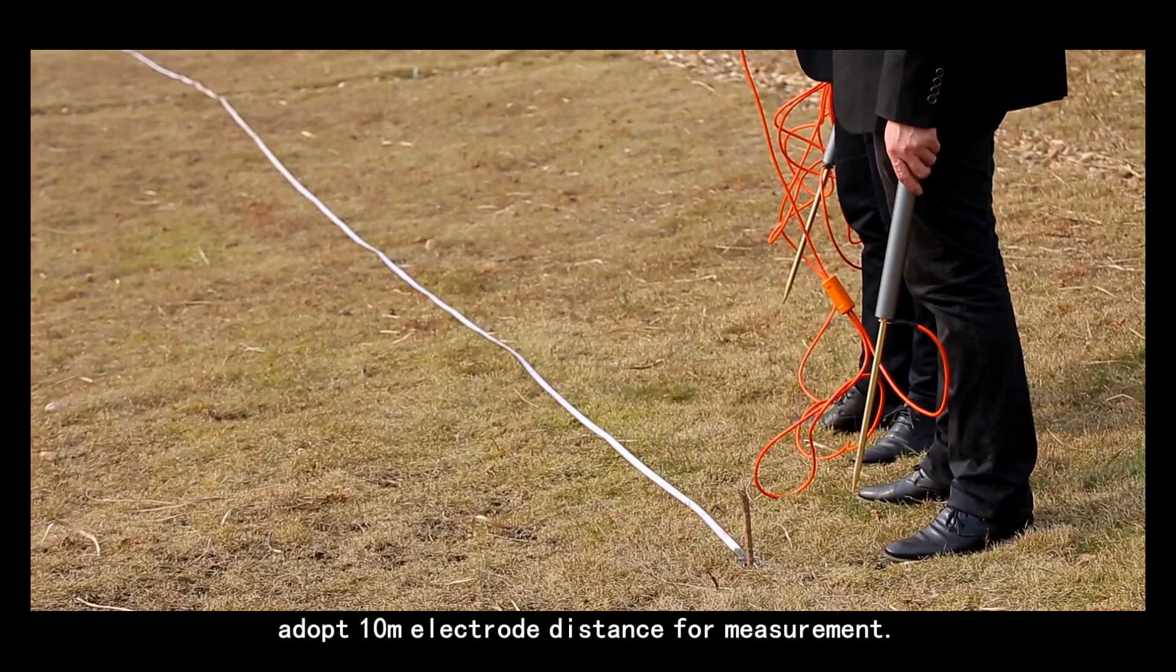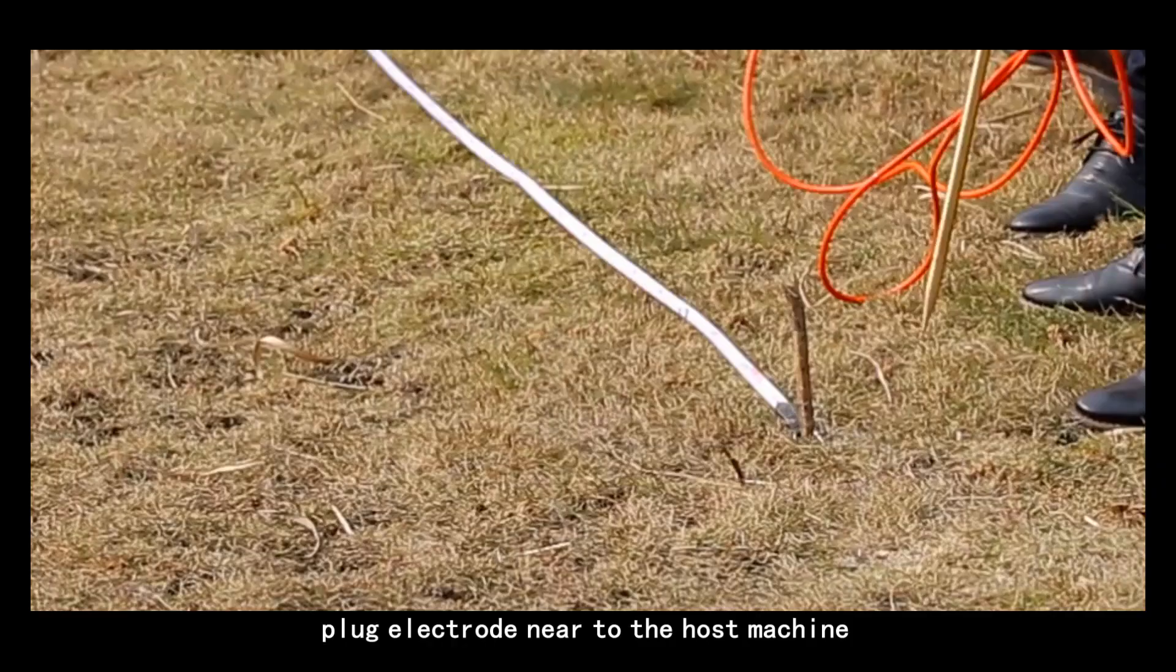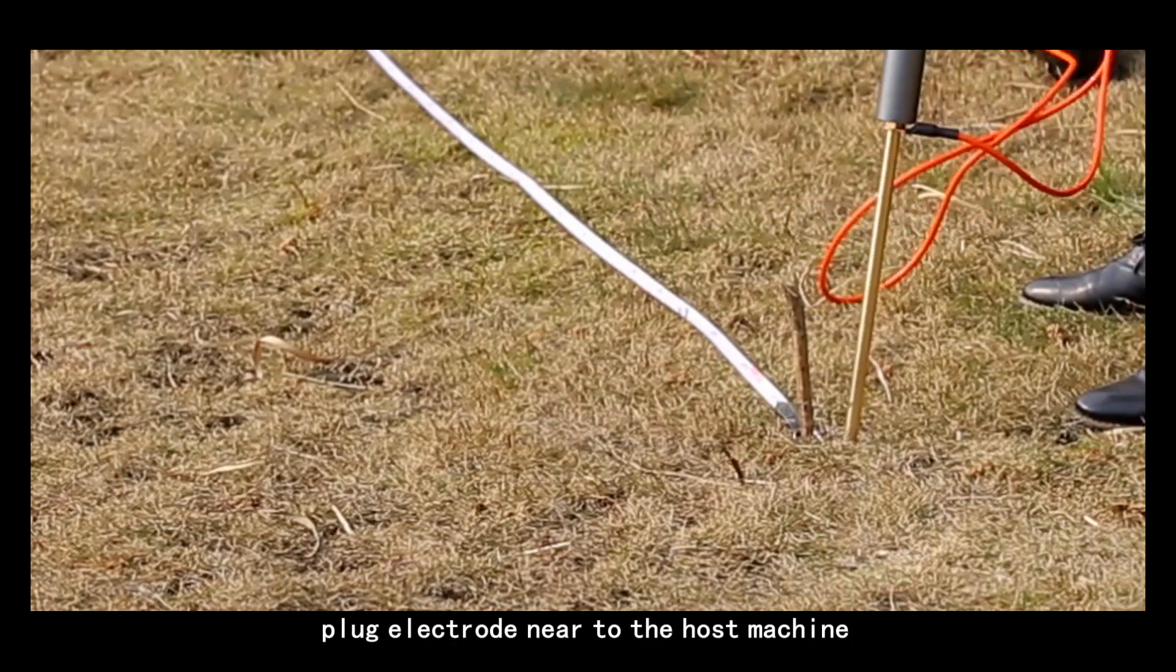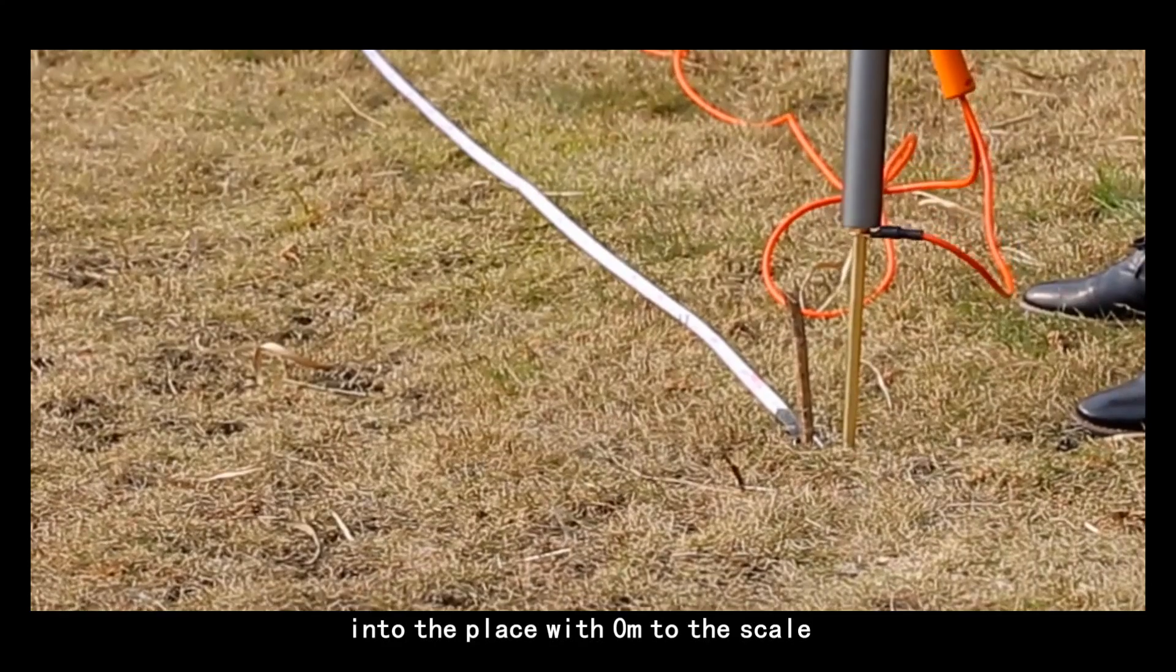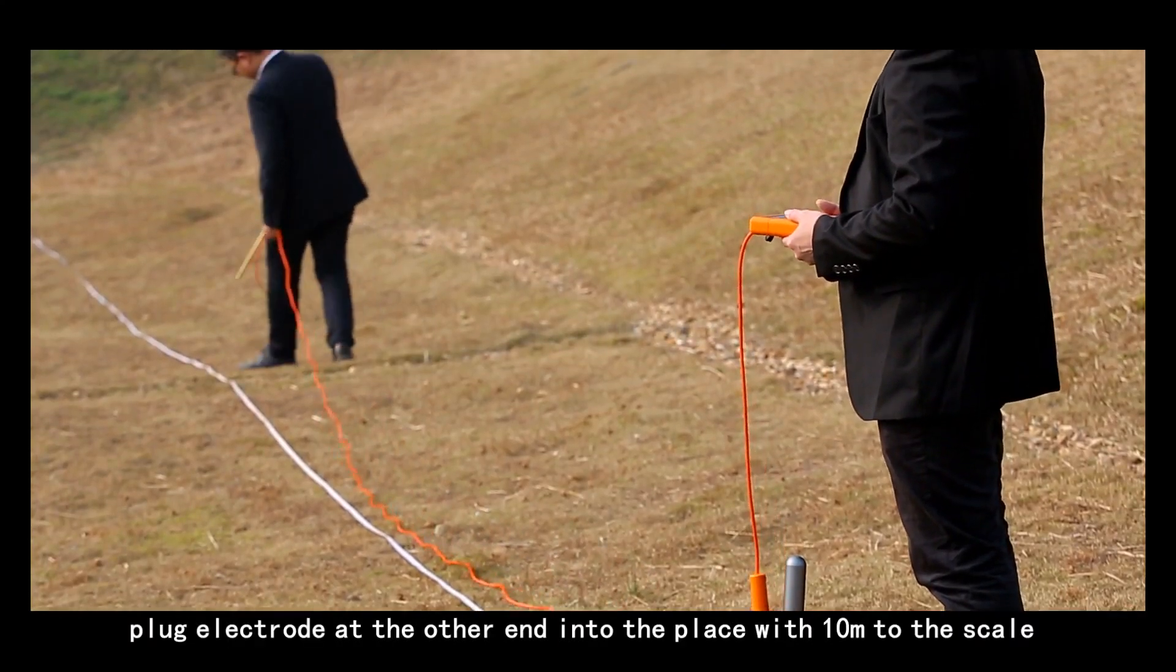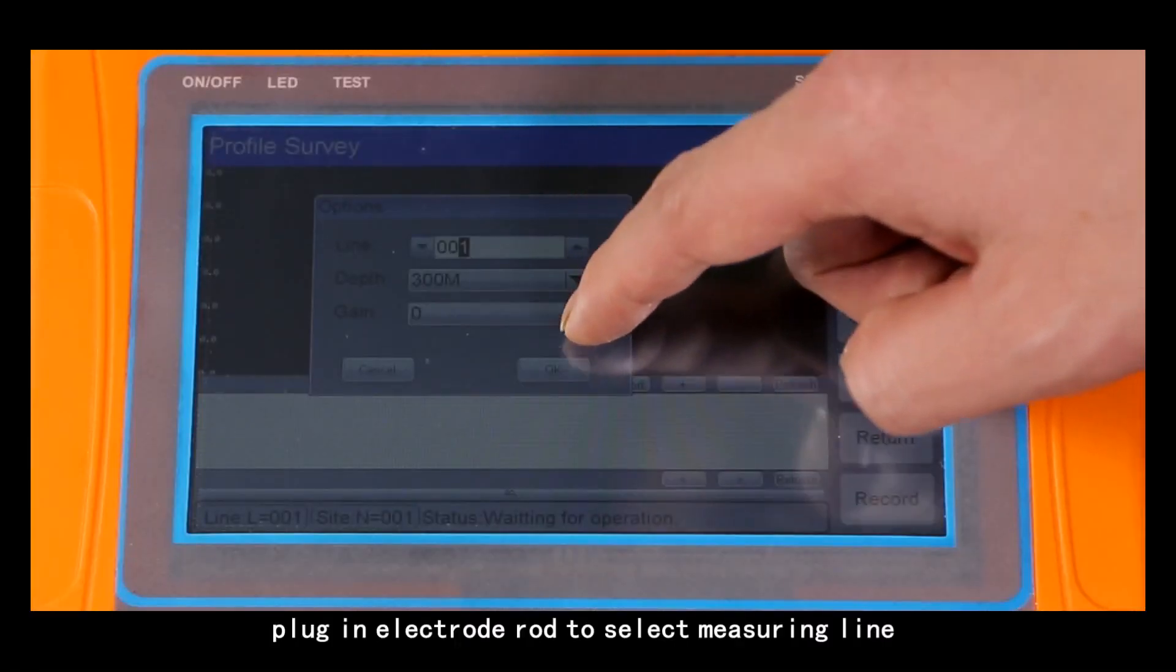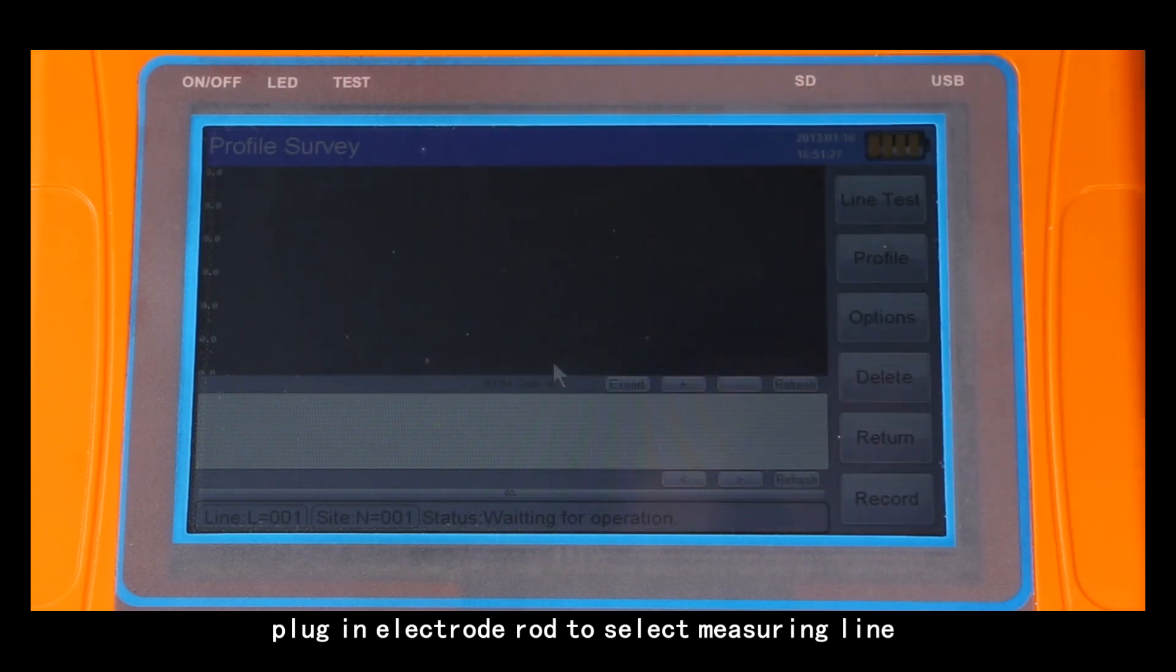In the following, adopt 10 meters electrode distance for measurement. Plug electrode near to the host machine into the place with 0 meters on the scale. Plug electrode at the other end into the place with 10 meters on the scale. Plug in electrode rod to select a measuring line.